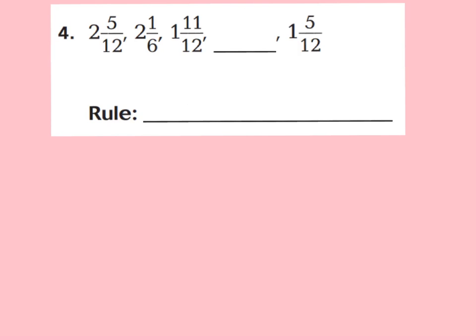Let's go ahead and take a look at question number 4. With question number 4, I see right away that my denominators are different. The rule with finding patterns in fractions is you want to make sure all your denominators are the same. So I want to list my multiples of 6: 6, 12. Because I have 12s in my other denominators, let's go ahead and change 2 and 1 sixth to have 12 as a denominator. 2 and 1 sixth is equal to 2 and 2 twelfths.